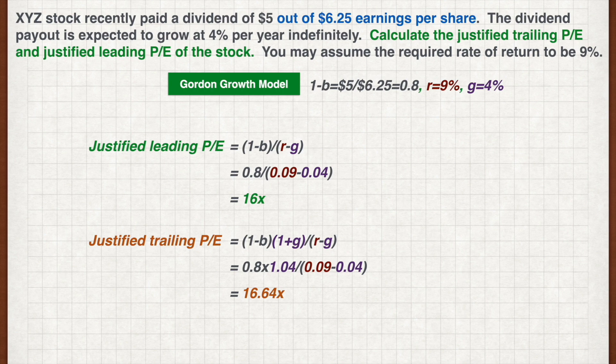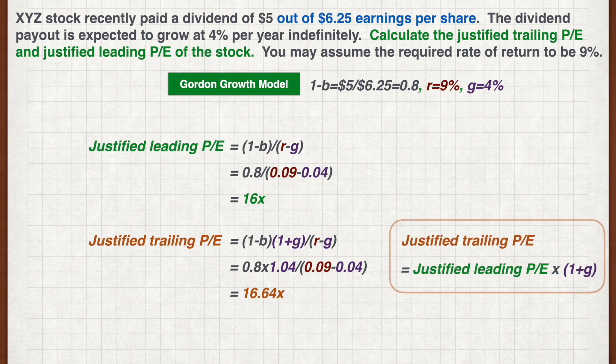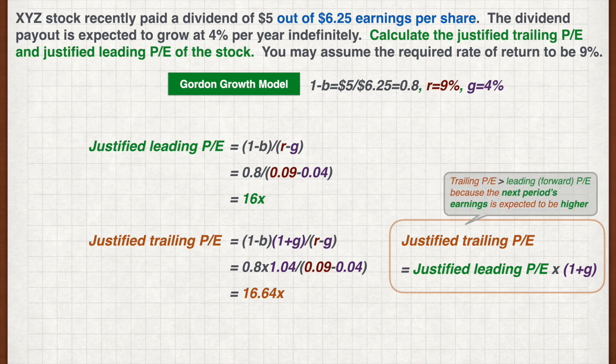You may have noticed that the justified trailing PE is simply the leading PE times 1 plus the growth rate. This means that the justified trailing PE should always be higher than the leading PE. This makes sense as we expect the next period's earnings to be higher, so the leading PE should be lower.